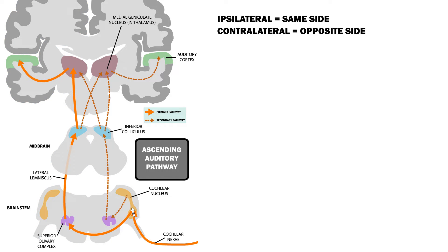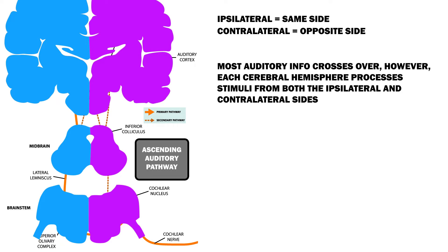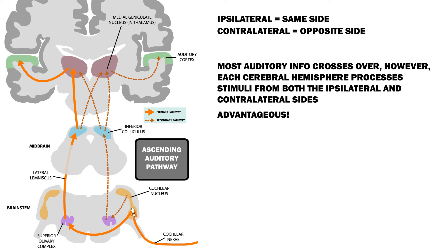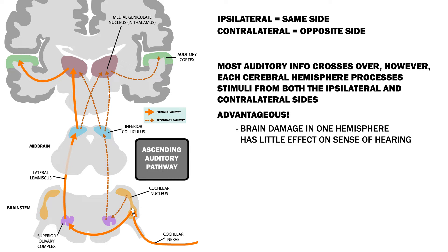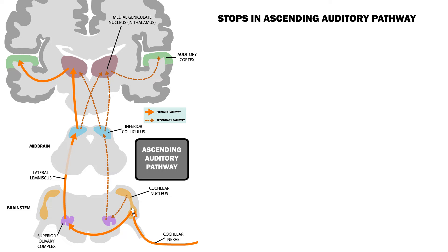Here is where it starts to get a little complicated. Most auditory information crosses over. However, each cerebral hemisphere processes stimuli from both the ipsi and contralateral sides. This is advantageous for two reasons. First, if you get brain damage in one hemisphere, your sense of hearing doesn't suffer much. Second, as humans we process some pretty complicated sounds, like those involved in speech, and getting input from both ears to both hemispheres allows for more processing potential. Anyway, back to the ascending auditory pathway.